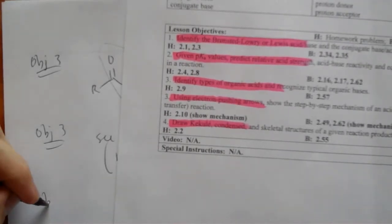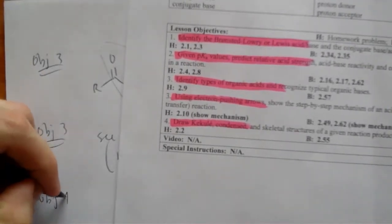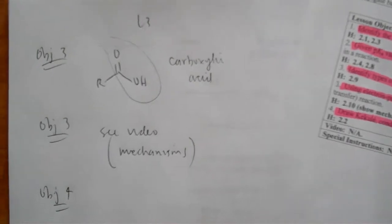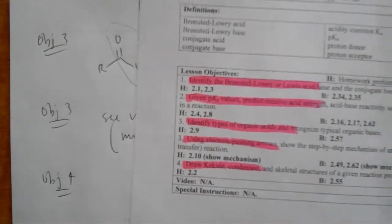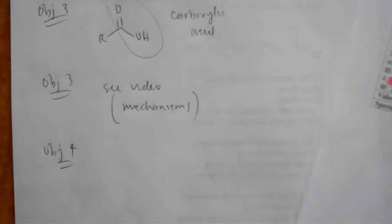And finally, objective number 4, this is the final part of lesson 3, is to draw, calculate, condense, and skeletal structures of a given reaction product.